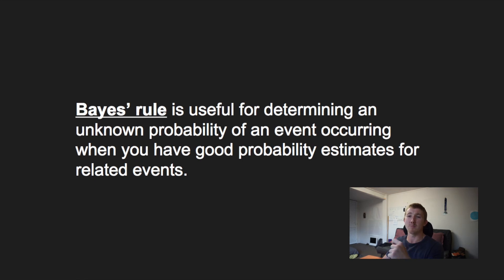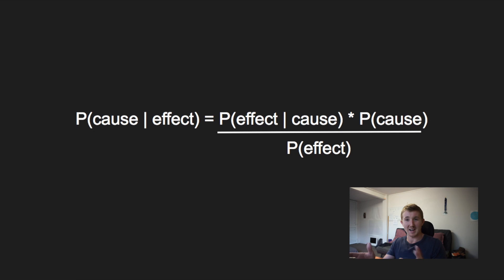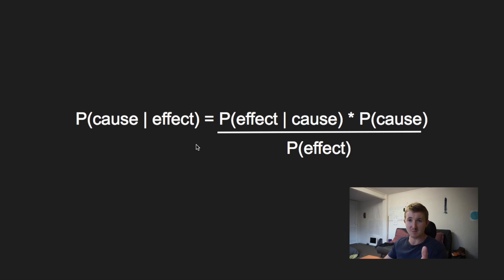So what's so cool about Bayes' rule? Bayes' rule is useful for determining an unknown probability of an event occurring when you have good probability estimates for related events. I understood it much better when I went through an example. The way the textbook lays it out in what they call a simple case: Bayes' rule is the probability of a cause happening given the effect. To work out the probability of the cause, you take the probability of the effect given the cause, times the probability of the cause, divided by the effect.